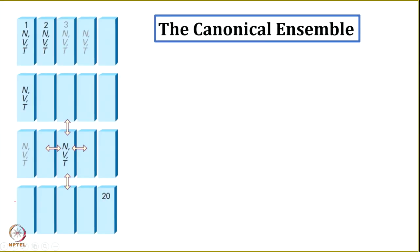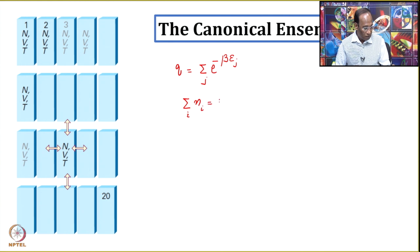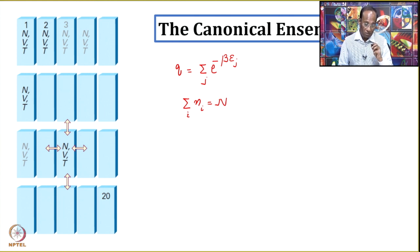The molecular partition function Q is equal to summation over j of exponential minus beta E_j. This was discussed for the system in which the total number of particles or molecules is fixed — that means summation_i n_i equals N — and also the total energy is fixed, that means summation_i n_i E_i equals E.